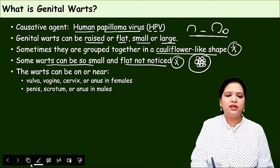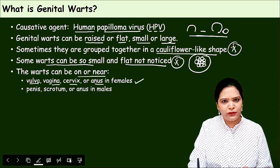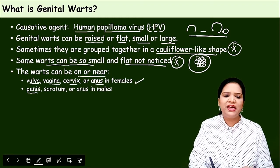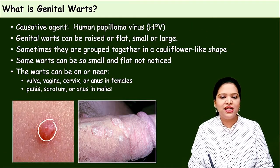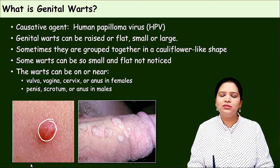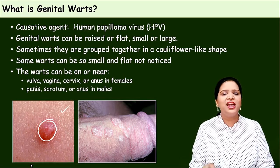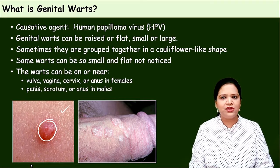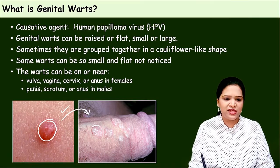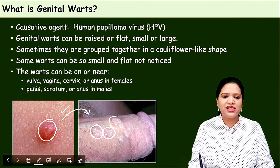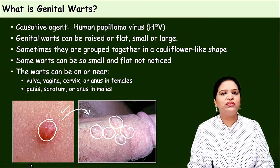The warts can be on or near the vulva, vagina, cervix, or anus in females; and on or near the penis, scrotum, or anus in males. Initially the warts look like a normal pimple and people often dismiss them. Later the organism multiplies, develops, and becomes a cauliflower-like appearance — larger in size. This is the characteristic feature of genital warts.